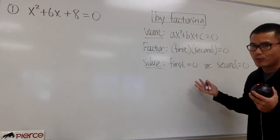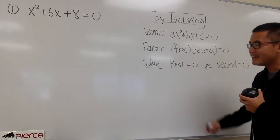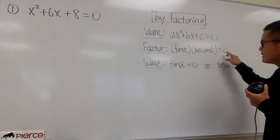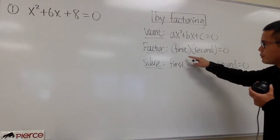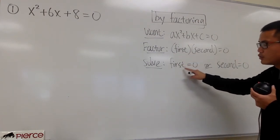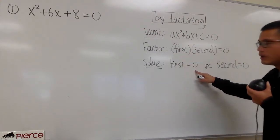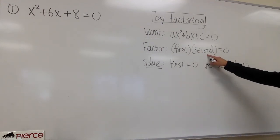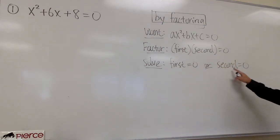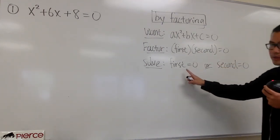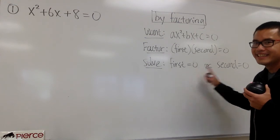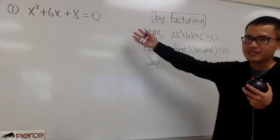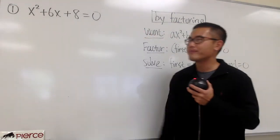Sometimes we may have one factor, but that's okay. Once we have the factoring done, be sure we set the first factor equal to zero, or the other case, set the second factor equal to zero. Then we just solve each one. Now let's check out the first example.